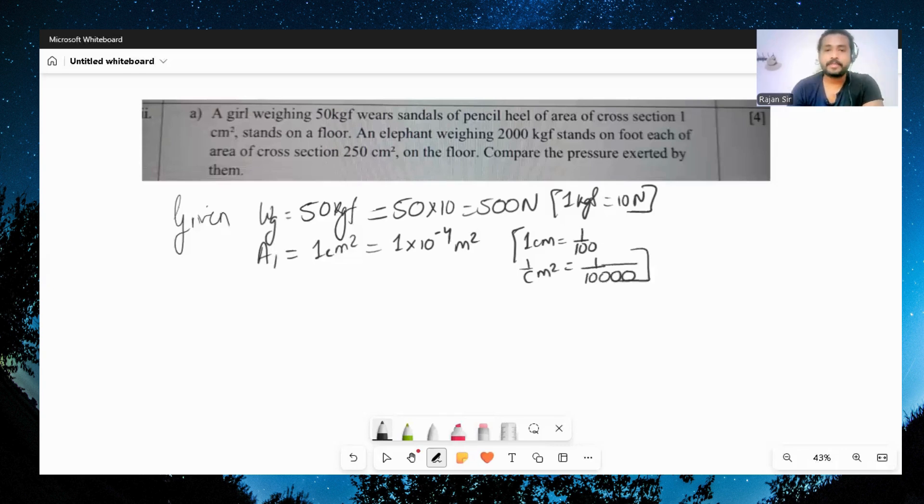Same way, let's go for the weight of the elephant. We have weight of elephant is equal to 2000 kgf, which will become 20,000 newton.